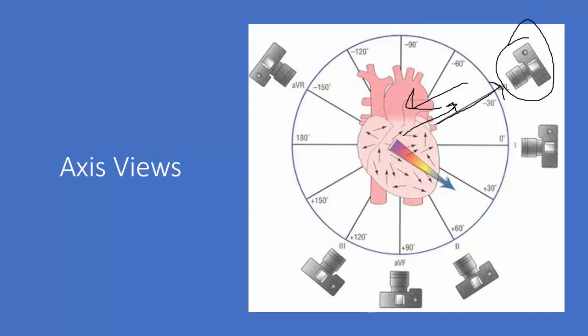If you've got an axis like this one going leftward and downward, any lead from here to here should see it as positive because these are all downward and leftward. The axis is the sum of the vectors traveling toward the positive electrode of any given lead.